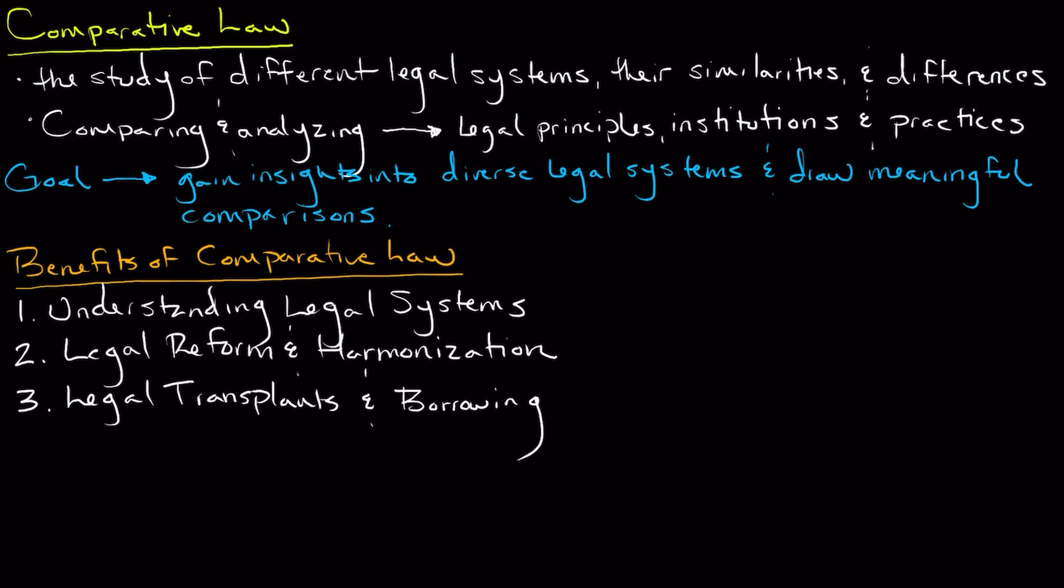The last benefit of comparative law is in the area of human rights and the rule of law. Comparative law plays a vital role in promoting human rights and the rule of law globally. By comparing legal systems, we can identify areas where human rights protections are strong or lacking and work towards enhancing the legal framework to safeguard individual liberties.